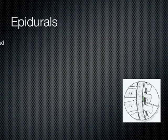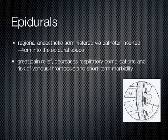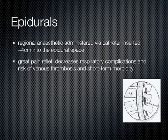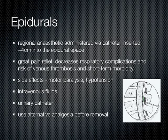An epidural is an infusion of local anesthetic, often with an opioid like morphine or fentanyl. It is a catheter inserted about 4 centimeters into the epidural space, done by an anesthetist in theater, with the catheter left in for a few days after surgery. Epidurals can be used in abdominal, urogenital, and obstetric surgeries, among others. Benefits include great pain relief and decreased respiratory complications, risk of venous thrombosis, and short-term morbidity. Side effects include motor paralysis and hypotension. The infusion rate is usually around 5 to 15 milliliters per hour. Intravenous fluids must be given, urinary catheterization may be required, and before removal, alternative analgesia must be started.